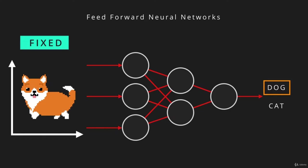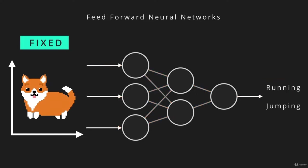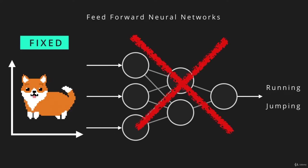However, these networks tend to perform very poorly when the input data is a sequence. A sequence is a stream of ordered data where each data point is dependent on the other. Imagine if the dog we have in front of us started walking — the animation you are seeing is a stream of images ordered one after the other, hence forming a sequence. The neural network would have a really hard time determining what action the dog is taking, since it has no way of referring back to previous inputs.